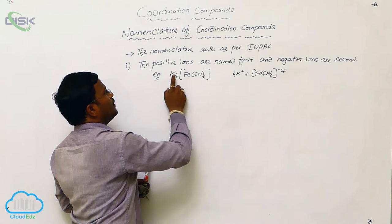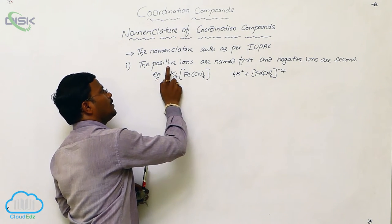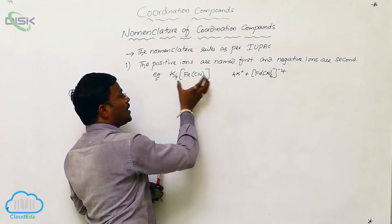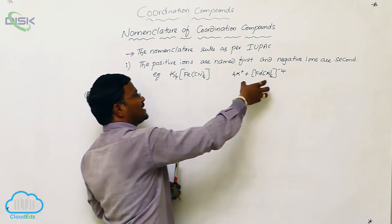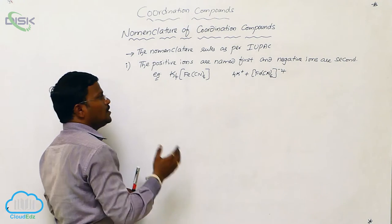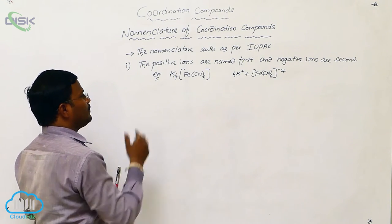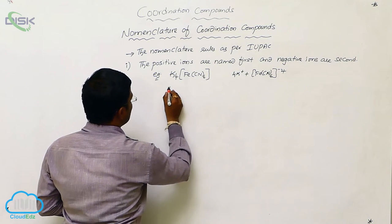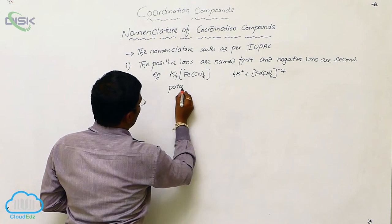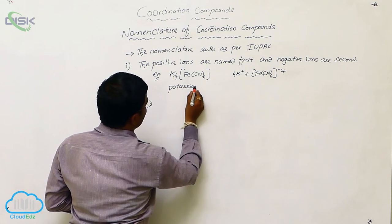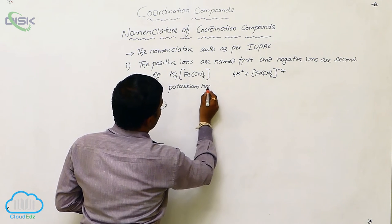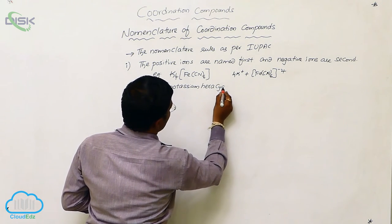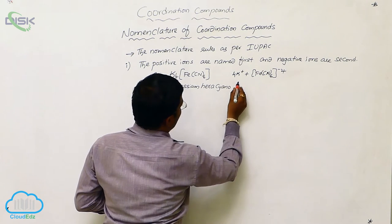To provide the name for this compound, first what do we write? The name of the potassium. So it starts with potassium hexacyanoferrate(II).